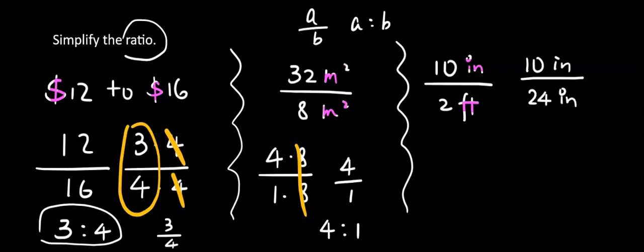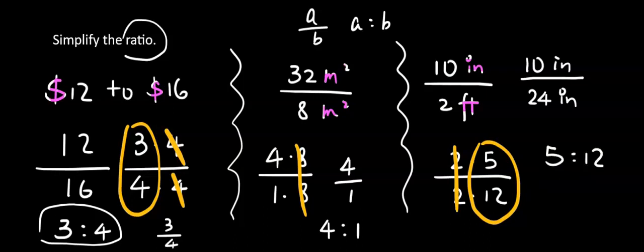Alright, now 10 is 2 times 5. 24 is 2 times 12. 2 divided by 2, that is 1. And we have 5 to 12. You can write down 5 to 12. You can also say 5 to 12.